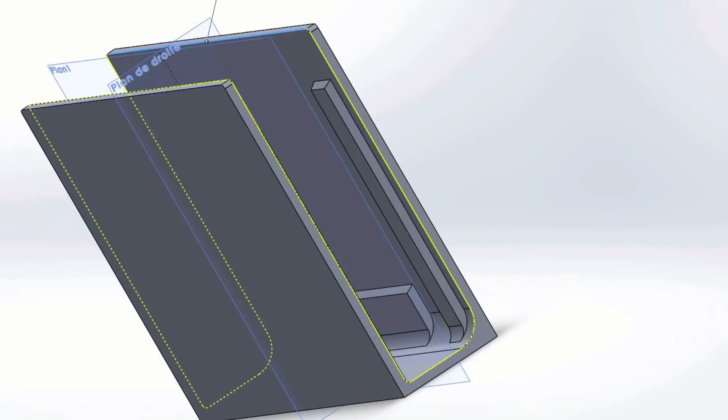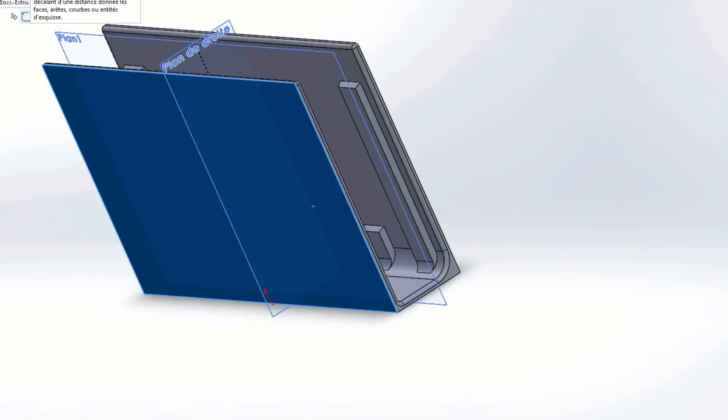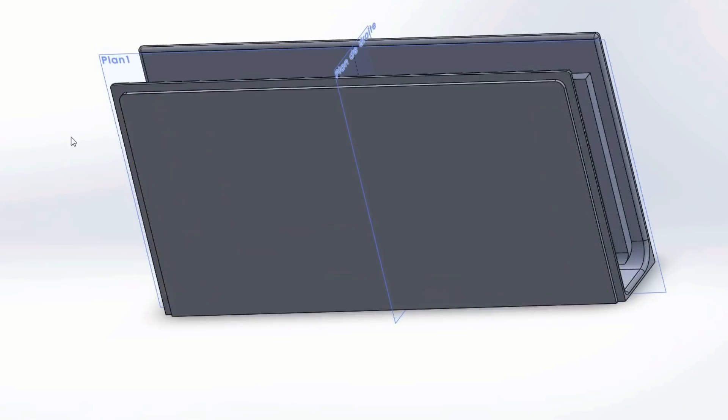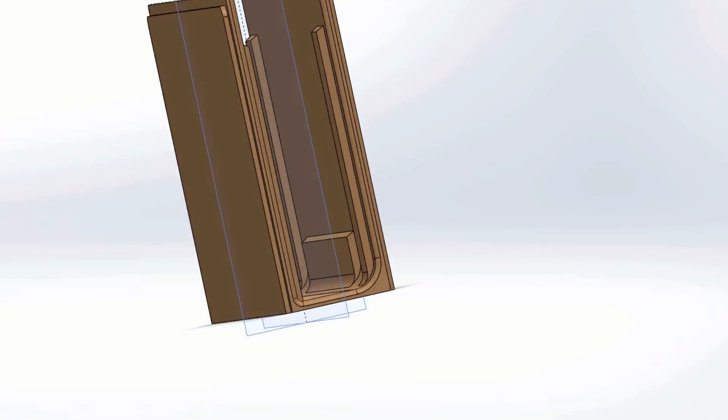This will require at least one test print to adjust the measurements, which were mostly eyeballed. The addition of a little bump on each side will ensure it fits tightly into the case. When you insert it, it shouldn't be able to fall out.